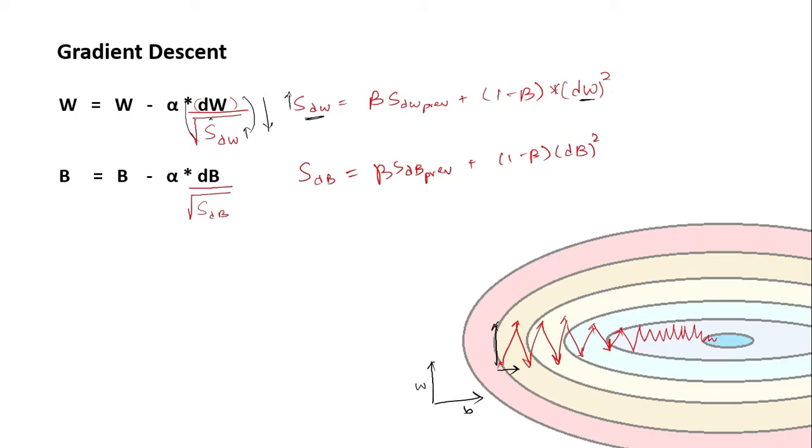Thus the w is going to be updated by a smaller quantity, thus this vertical movement will reduce. And as the movement in the b direction is smaller, this dB is going to be smaller, thus sdb is going to be smaller. And as we are dividing it with its square root, this entire quantity is going to be higher, thus the movement in the horizontal direction is going to be higher.